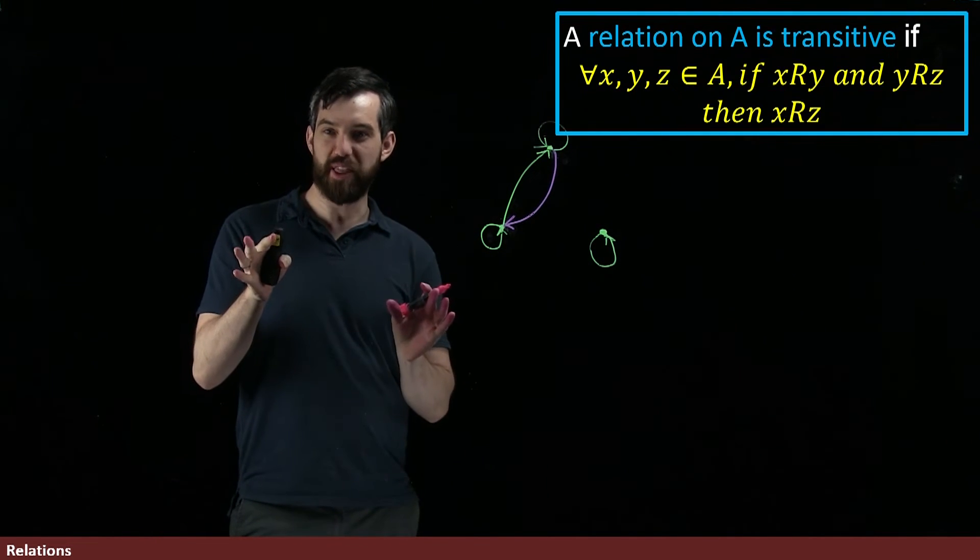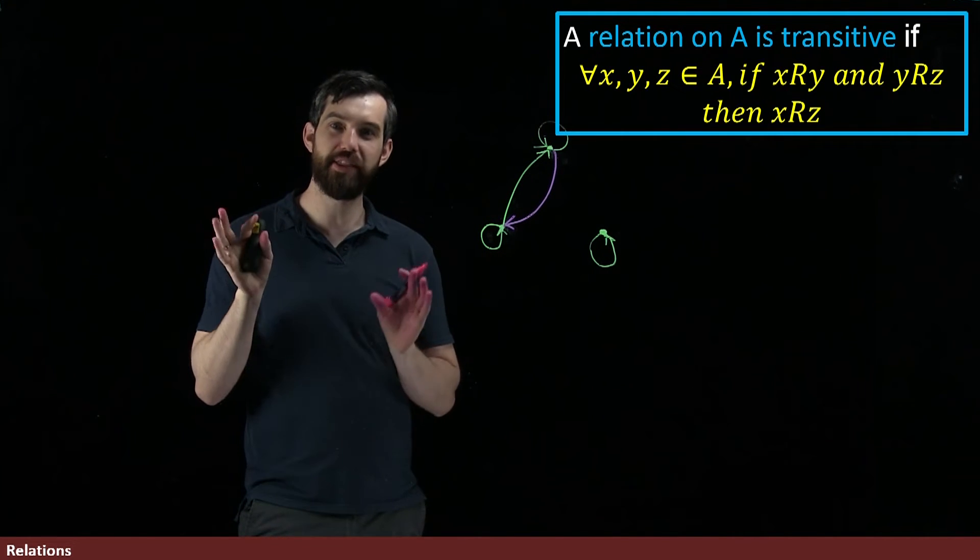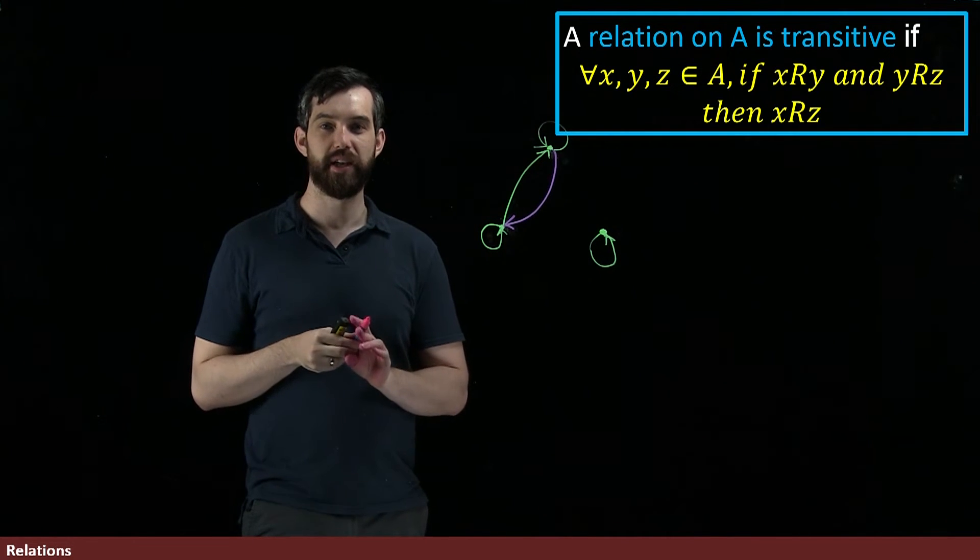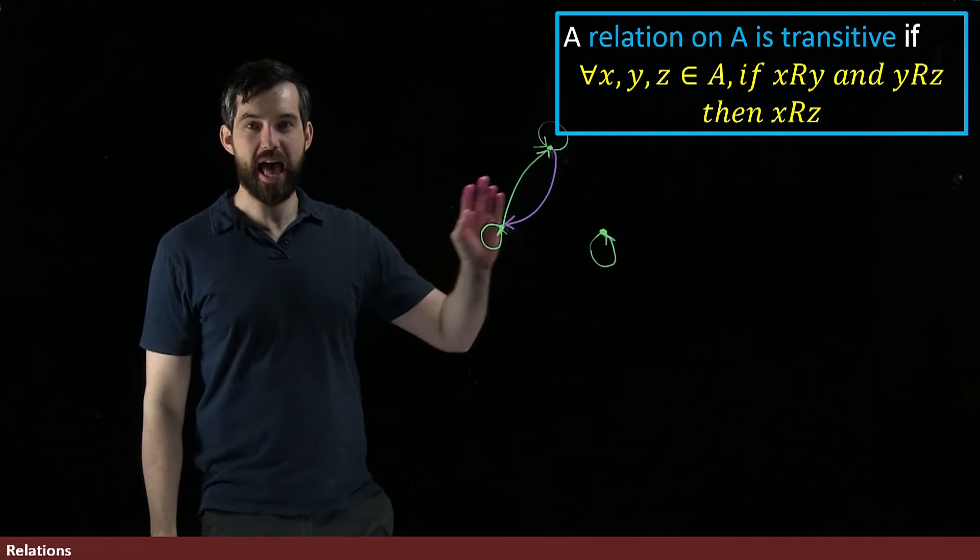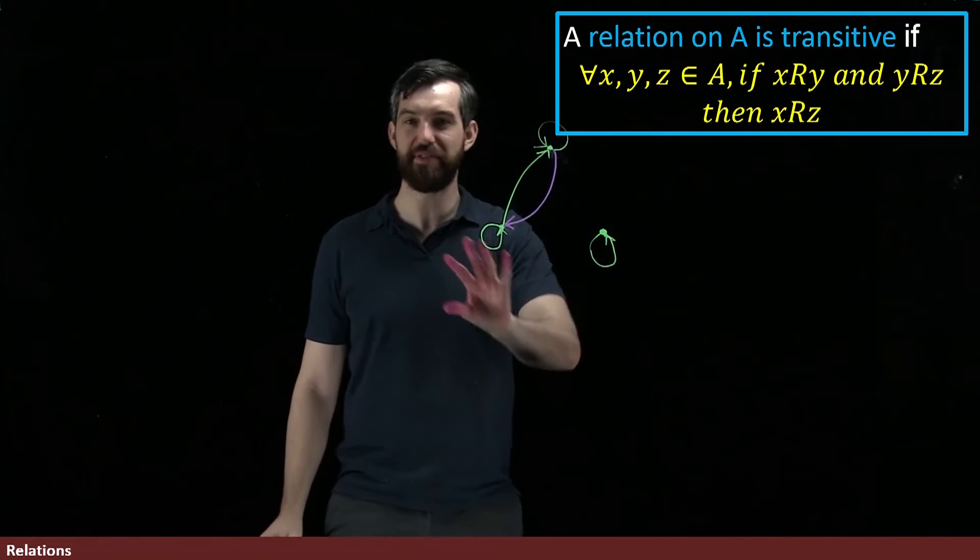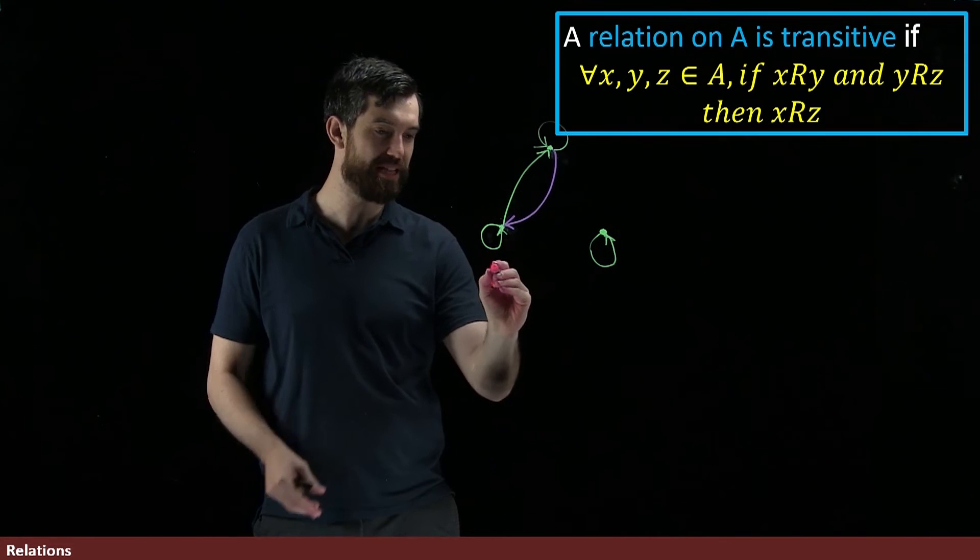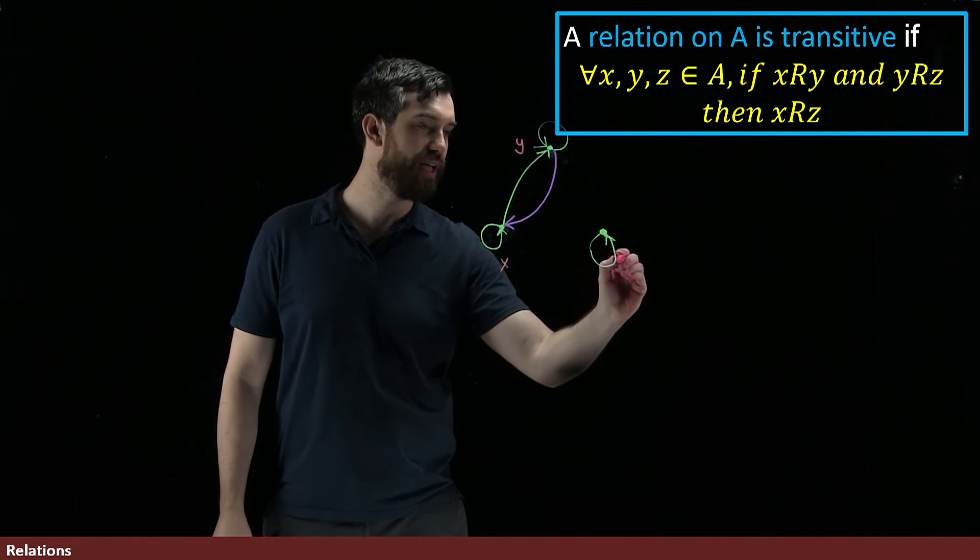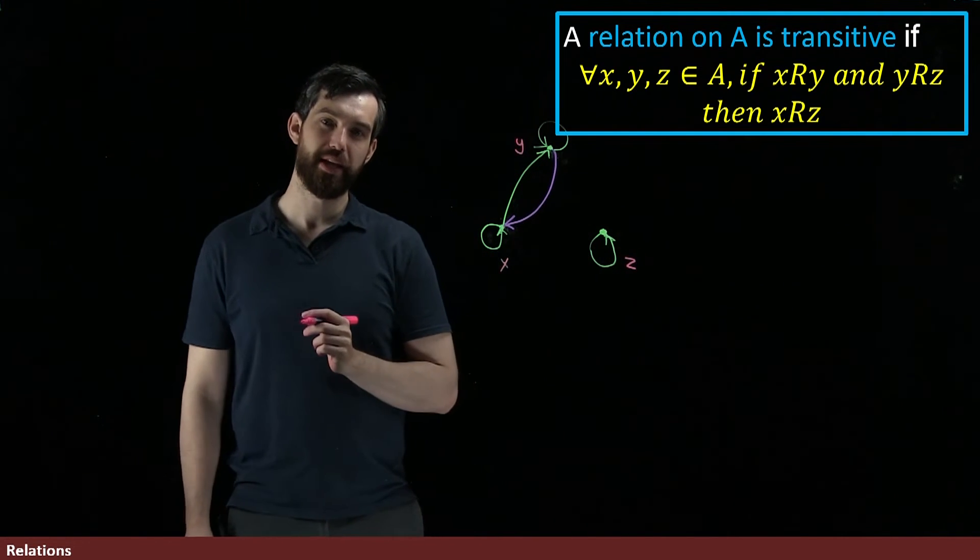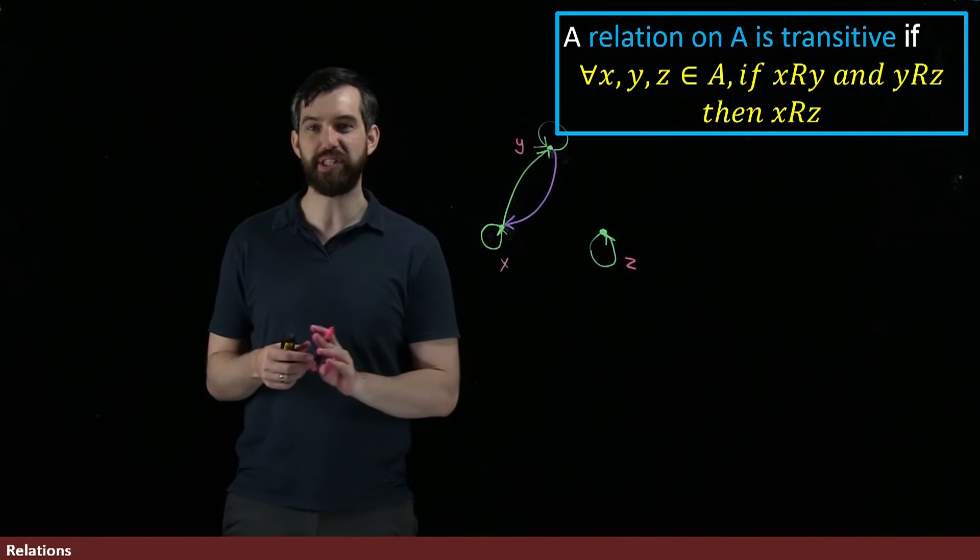The final property that we're going to talk about is transitivity. And the idea here is this: suppose it's the case that you've got three different points, and I've got an x, a y, and a z. May as well label them here. I've got an x, I've got a y, and I've got a z.